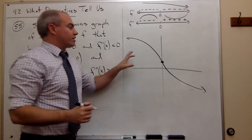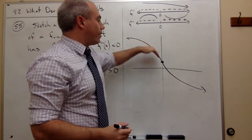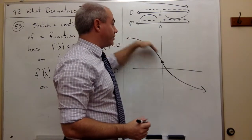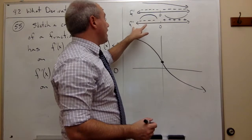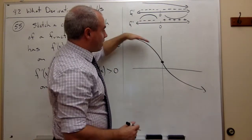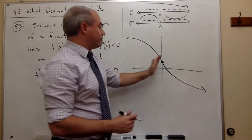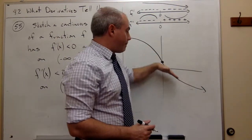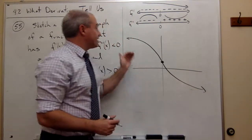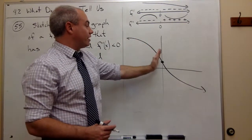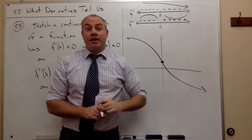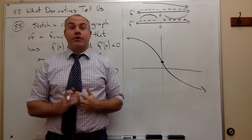Let's look at this function for just a second. Is it always going down? Yes, it is — always moving down from left to right. From negative infinity to zero, is it concave down, bending downward? Yes, it is. And from zero to infinity, is it bending upward? Yes, it is. So we can see this thing is concave down from negative infinity to zero, concave up from zero to infinity, and always decreasing. That's exactly what we were looking for in a graph.